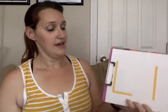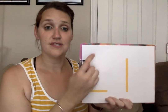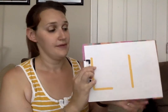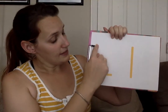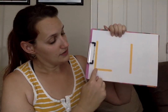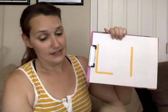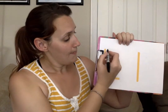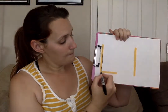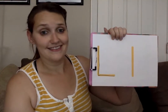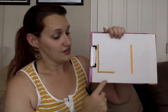Now we're going to work on tracing our letter L. When we start our letters we start at the top. So we're going to trace our capital L first. We're going to go big line down, little line. Ready? Big line down, little line. It's our capital L.